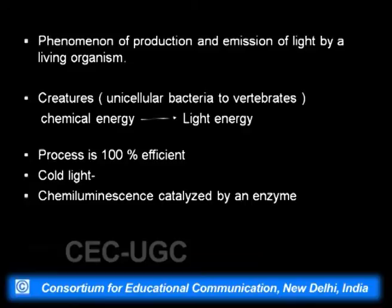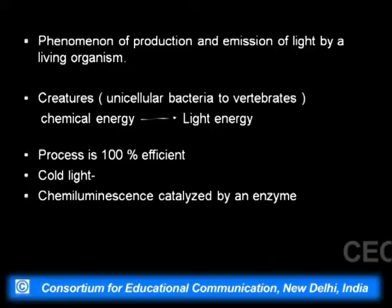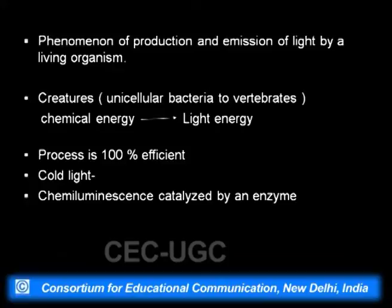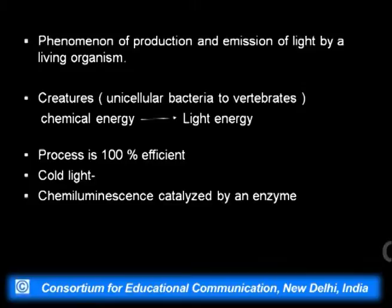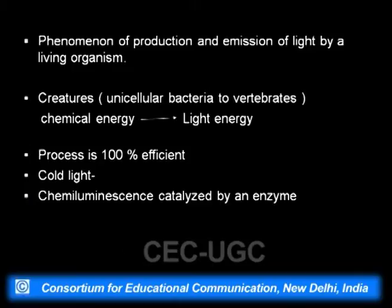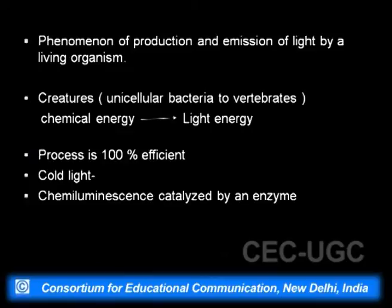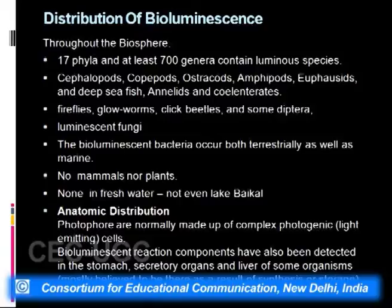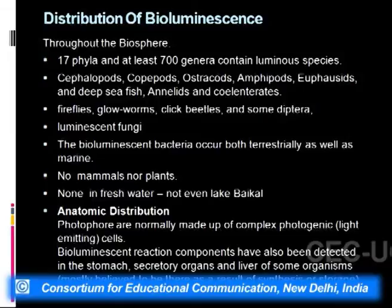Bioluminescence is a phenomenon of production or emission of light by a living organism. The organism uses chemical energy and emits photons or light energy. This process in living organisms is 100% efficient and is called cold light because there is no simultaneous production of heat, which is important as heat production can cause damage to the organism. It is a chemiluminescence type of luminescence requiring certain enzymes.